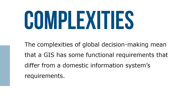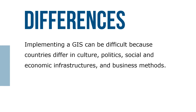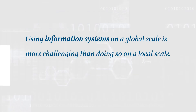The complexities of global decision-making mean that GIS has some functional requirements that differ from domestic information system requirements. Implementing a GIS can be difficult because countries differ in culture, politics, social and economic infrastructures, and business methods. Using information systems on a global scale is more challenging than doing so on a local scale.